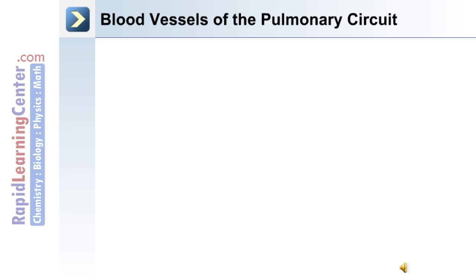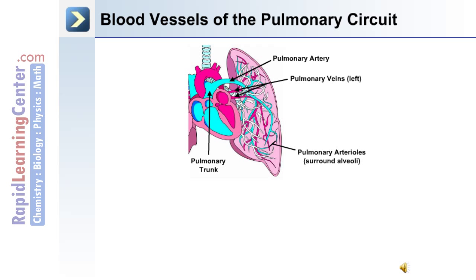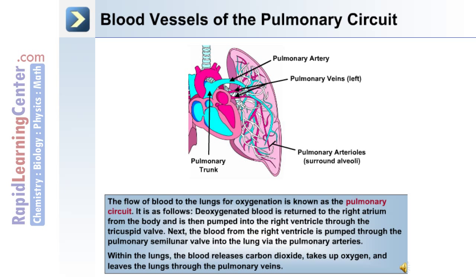Blood flow in the body can be divided into the pulmonary circuit and the systemic circuit. The pulmonary vessels include the pulmonary artery and the pulmonary veins, as well as the pulmonary arterioles which surround the alveoli of the lungs. The flow of blood to the lungs for oxygenation is known as the pulmonary circuit.